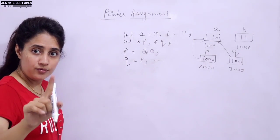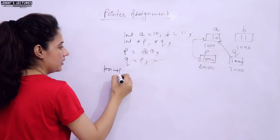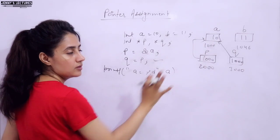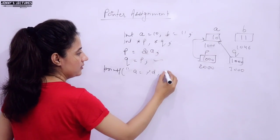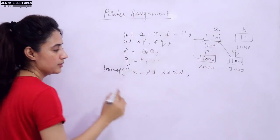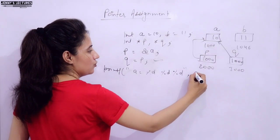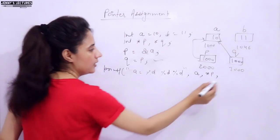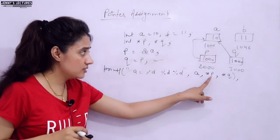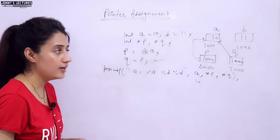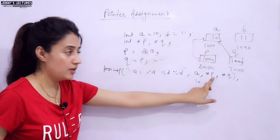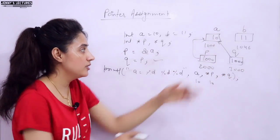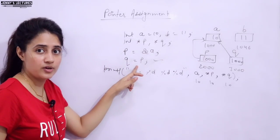Now if I print using three methods — 'a', '*p', and '*q' — all three will give 10. The variable a directly gives 10. '*p' means value at the address in p, which is 1000, and the value there is 10. '*q' also has address 1000 (since q = p), so value at 1000 is also 10. All three print 10.